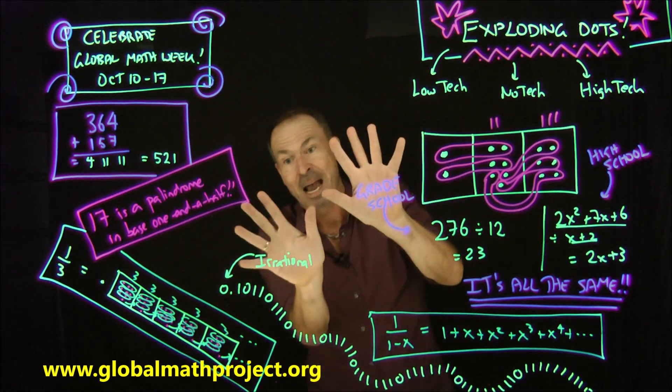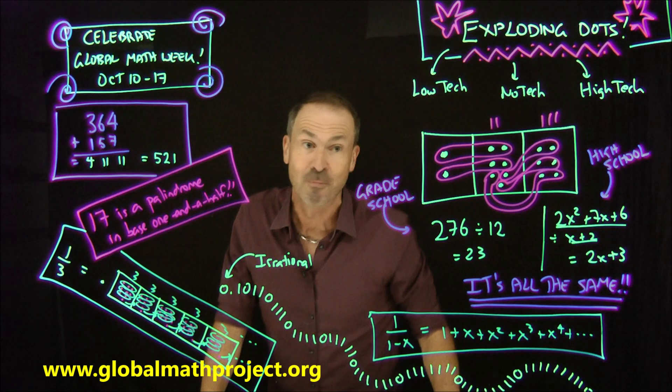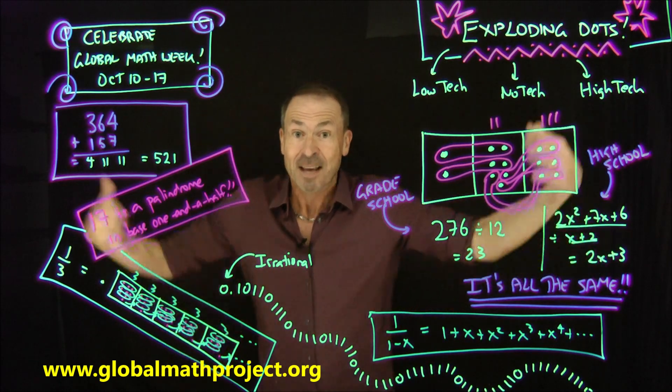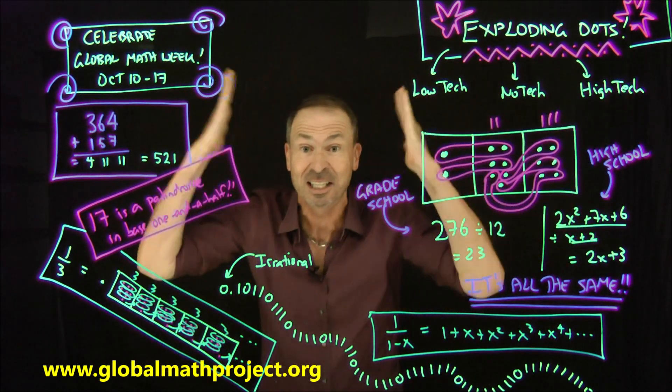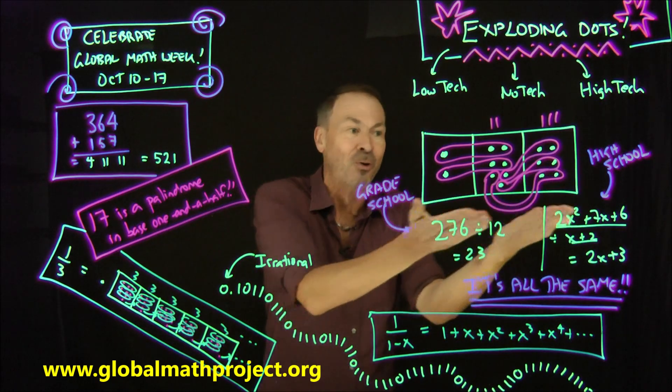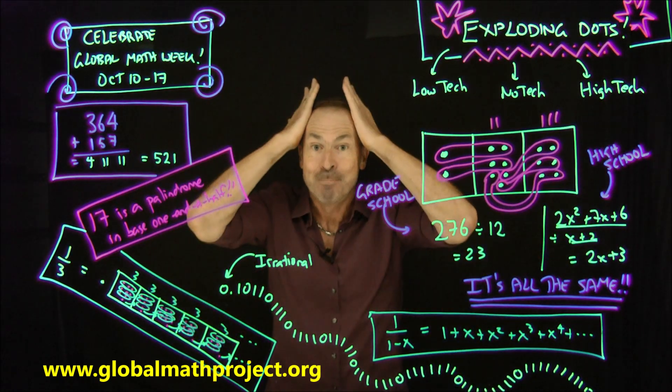And why stop there? With base 10, our humanus, we can actually go to high school math and do it all in base x. That's called polynomial algebra, and it's just the same mathematics all over again. All we did in grade school also works in high school. Mind-blowing.